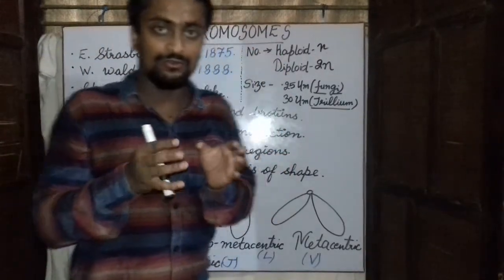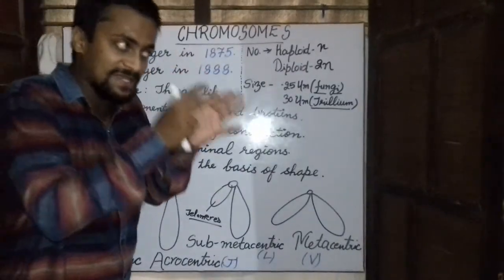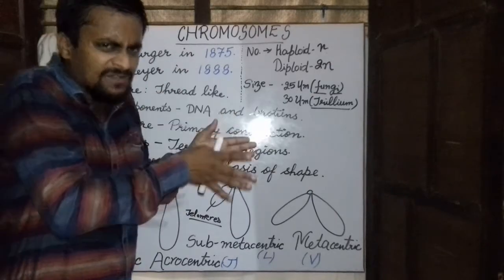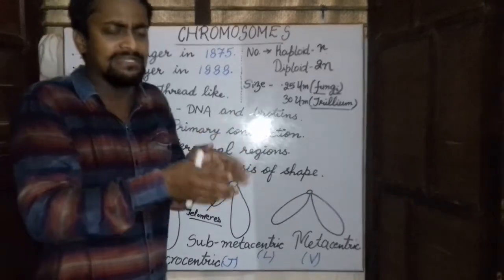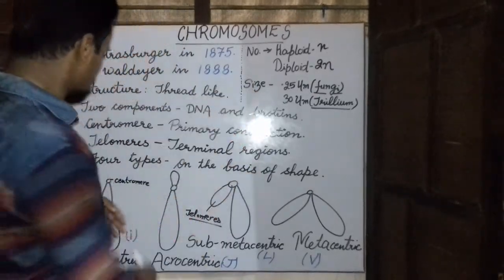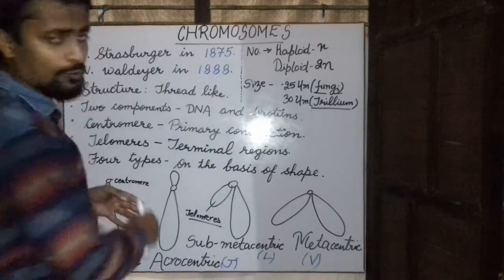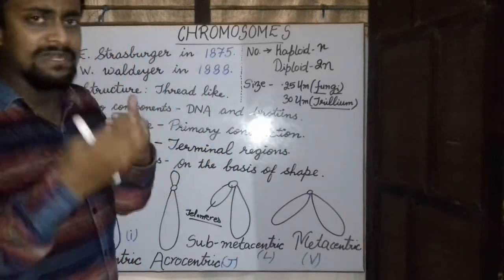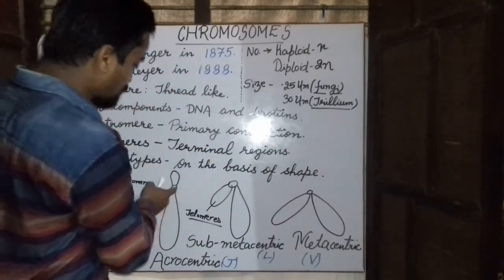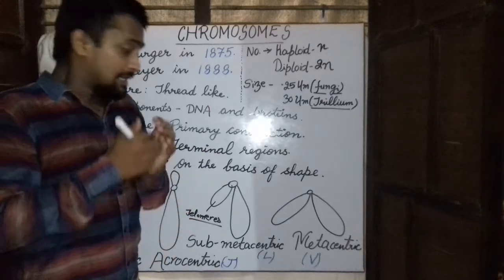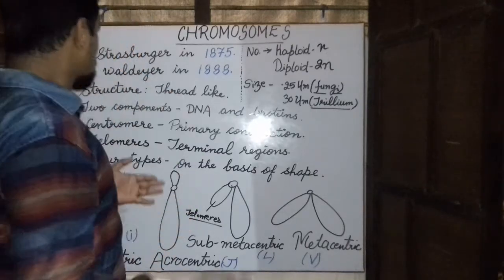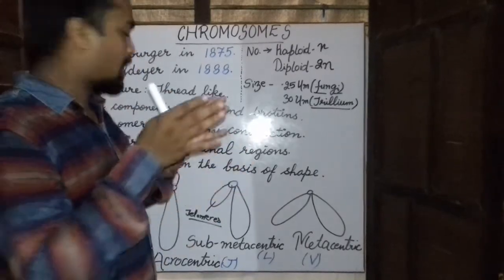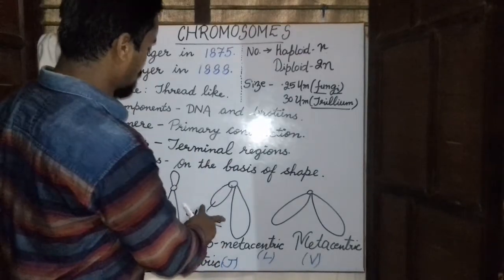These chromosomes extend out from a specific part of the nucleus called the centromere. Each chromosome mainly consists of two arms, and the terminal regions of these two arms are called the telomeres.